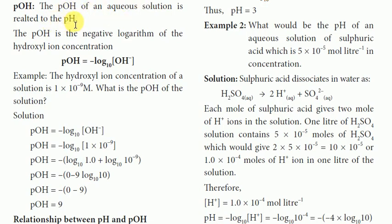The pOH is the negative logarithm of the hydroxyl ion concentration. So pOH is equal to minus log10 of the concentration of OH⁻ ions. Mathematically, pOH equals minus log10 [OH⁻].